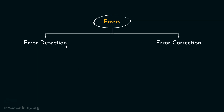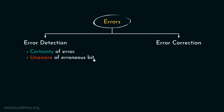Coming to error detection, here we actually have the certainty of error — we are quite certain that the error has occurred. However, we are unaware of the erroneous bit. On the contrary, in case of error correction, we not only have the certainty of error, but additionally we are also aware of the erroneous bit. And since we are aware of the erroneous bit, we go ahead and do the correction. In today's discussion, we will mainly focus on error detection.